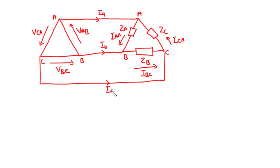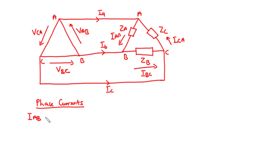In such a circuit it is usually desired to find the phase currents as well as the line currents. Considering the phase current, we are going to apply KVL for each of the loops. Considering this loop, the phase current Iab equals the phase voltage Vab divided by the phase impedance Za.